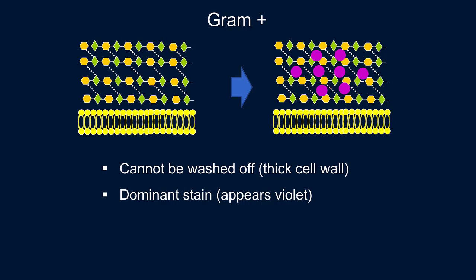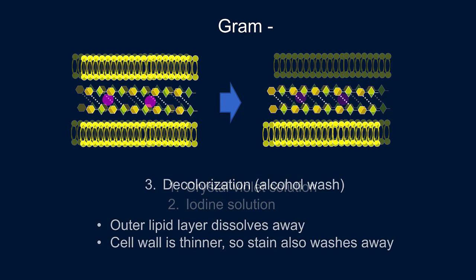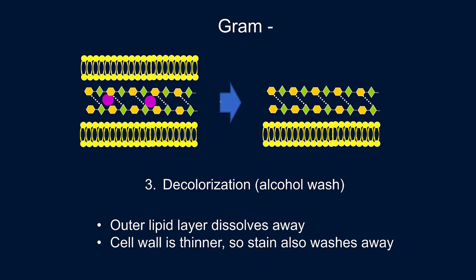In gram negative things are different, even though the steps are the same. We still add crystal violet solution, which goes inside the cell wall, and we add the iodine solution, which results in crystallization and incorporation into the cell wall. The difference comes when we do the alcohol wash. Before the wash, you can see there's the outer lipid layer, and then the stain integrated into the cell wall — but it's a thinner cell wall.